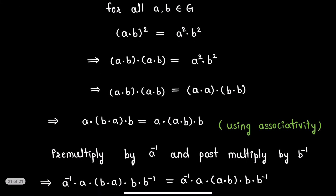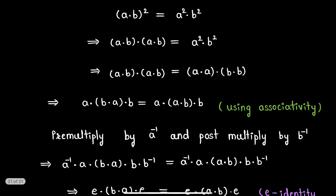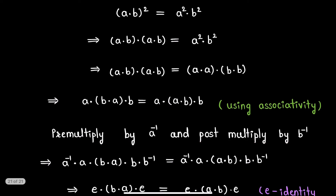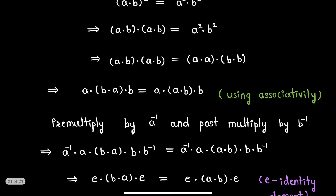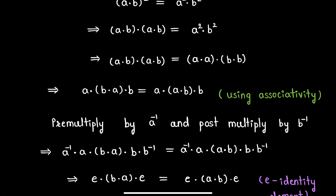Now for this expression, we will pre-multiply by a⁻¹ and post-multiply by b⁻¹. After doing that we get: a⁻¹·a·b·a·b·b⁻¹ = a⁻¹·a·a·b·b·b⁻¹.